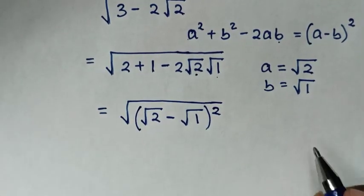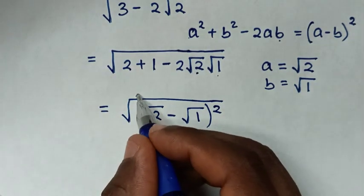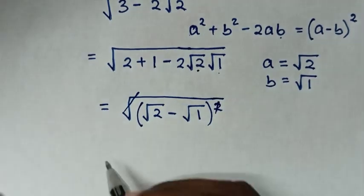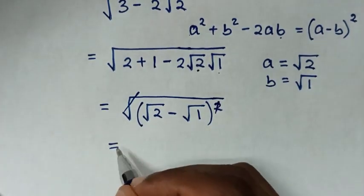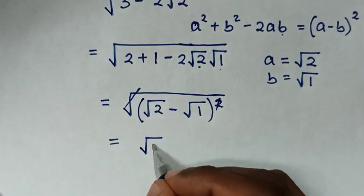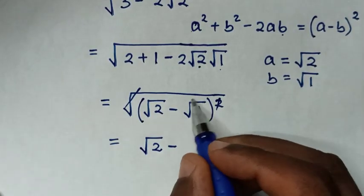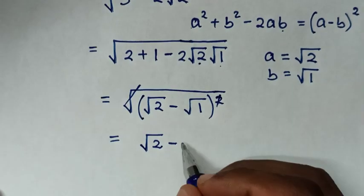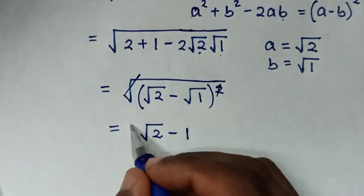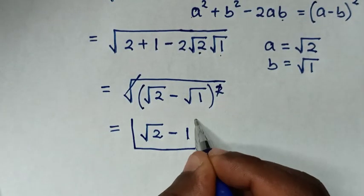Then in the next step, the square root cancels with the square, so it will be equal to square root of 2 minus square root of 1, which is 1. Therefore, square root of 2 minus 1 is our final answer.